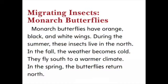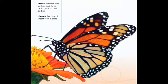Migrating insects: Monarch butterflies have orange, black, and white wings. During the summer, these insects live in the north. In the fall, the weather becomes cold and they fly south to a warmer climate. In the spring, the butterflies return north. Insects are animals with six legs and three main parts to their bodies. Climate is the type of weather in a place.